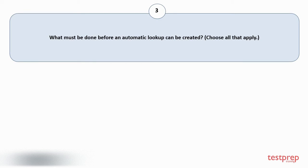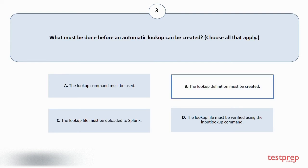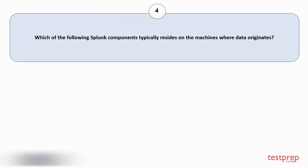Question number three: what must be done before an automatic lookup can be created? Choose all that apply. Your options are: A) the lookup command must be used, B) the lookup definition must be created, C) the lookup file must be uploaded to Splunk, D) the lookup file must be verified using the input lookup command. The correct answer is option B.